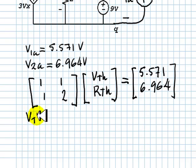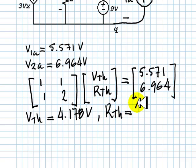VTh is, according to our solution, 4.178 volts, and RTh is 1.393 ohms.